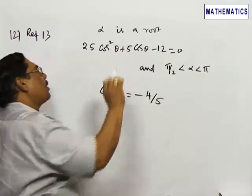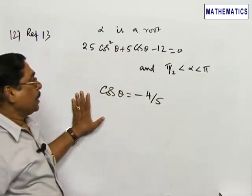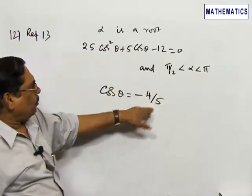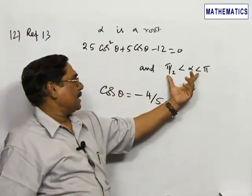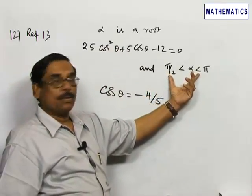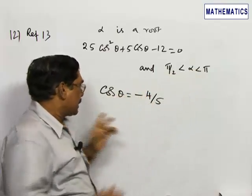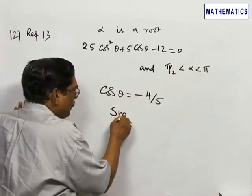Now, minus 4 by 5, we are interested in alpha being in the second quadrant. So cos theta equals minus 4 by 5, and sine theta in the second quadrant is positive and will be equal to 3 by 5.